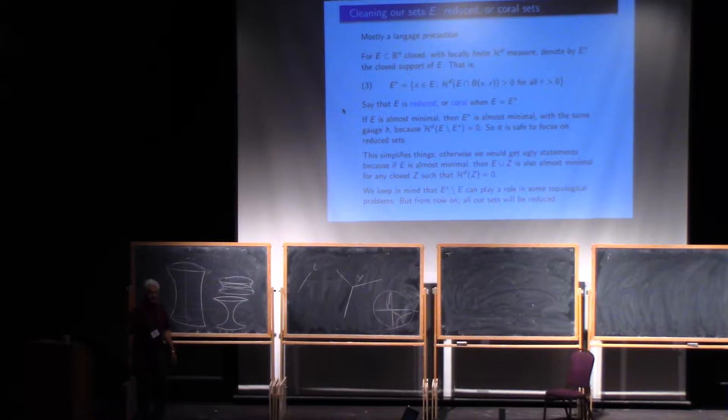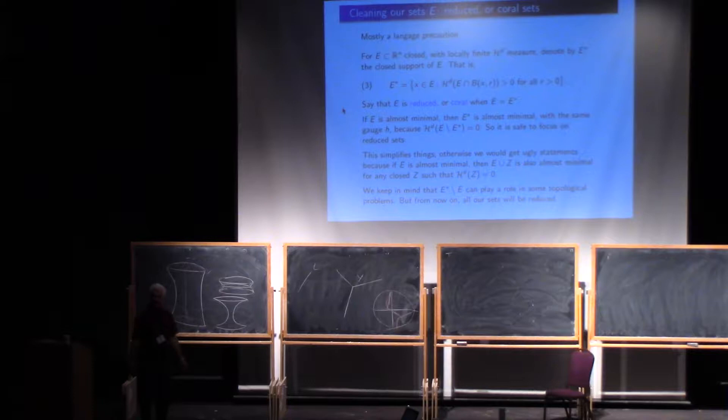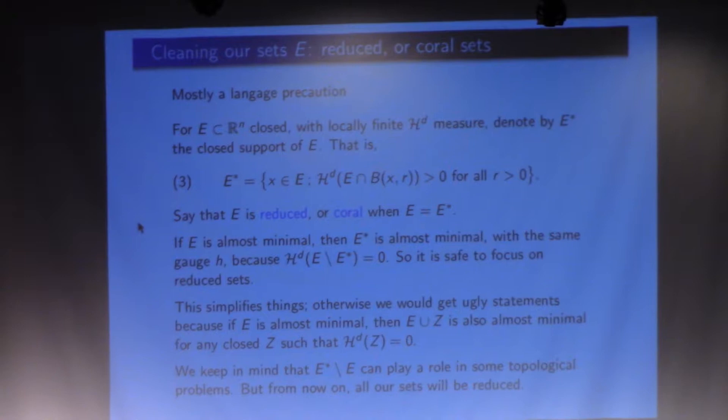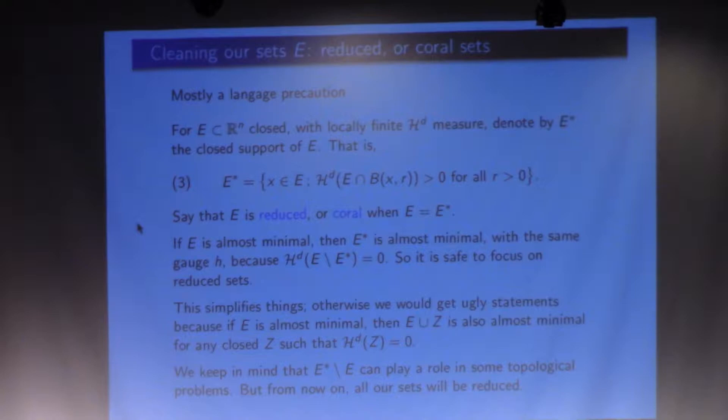I'll prove some estimates, and later on, if needed, I will return to the extra piece to talk about topology — but in fact, that will not happen this week. So: given an almost minimal set, I look at its core, say it is also almost minimal with the same constants, and study the regularity of that object. From now on, all my almost minimal sets will be reduced or coral, meaning I don't care about the extra piece.